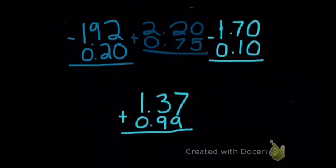Okay, so 2 minus 0 is 2, right? So we're going to put that down. What's 9 minus 2? It's 7, right? So let's put that down.